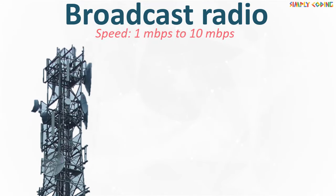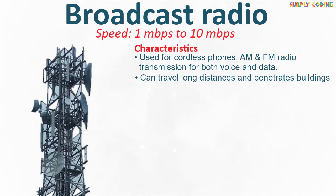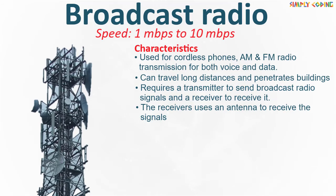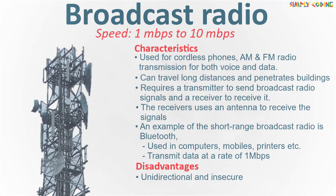Next is broadcast radio. The data transmission speed is between 1 Mbps and 10 Mbps. It is used for cordless phones, AM and FM radio transmission for both voice and data. It can travel over long distances and penetrates buildings easily. Radio transmission requires a transmitter to broadcast radio signals and a receiver to receive it. An example of short range broadcast radio communication is Bluetooth, which is used in computers, mobiles, printers, etc. It uses short range radio waves to transmit data at a rate of 1 Mbps among Bluetooth-enabled devices. The disadvantage of radio is that it is unidirectional and insecure, and also has multipath interference such as reflection from water and land bodies.